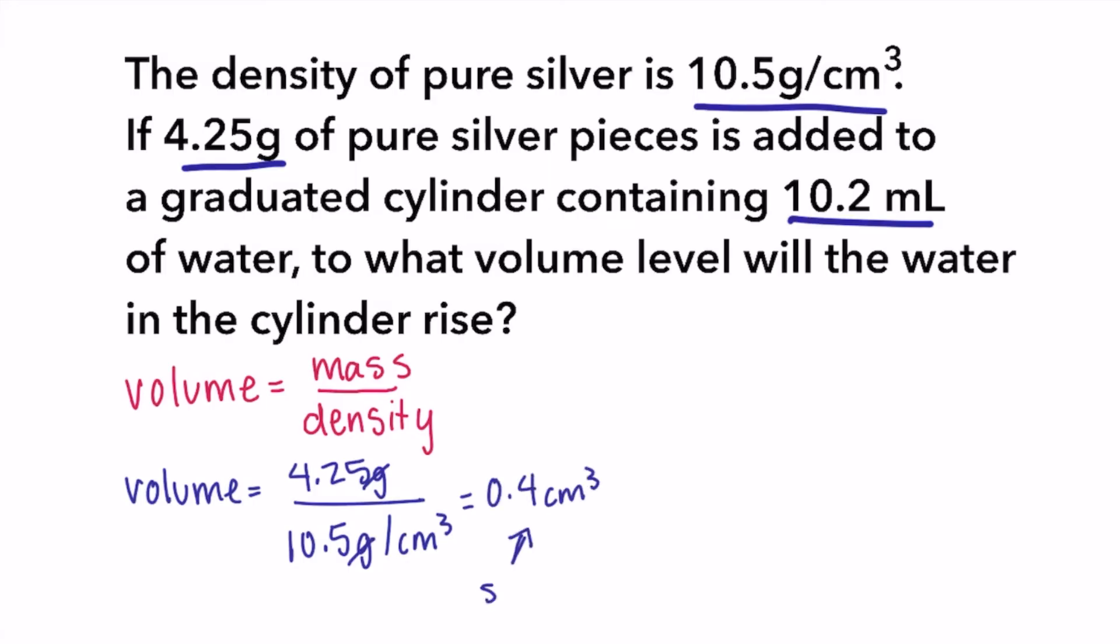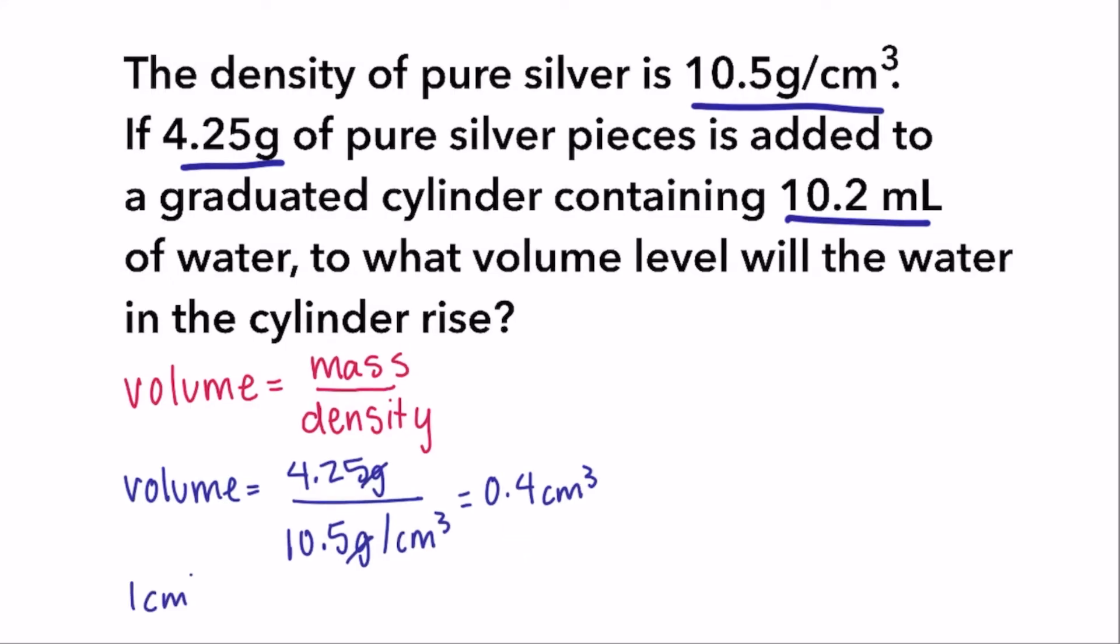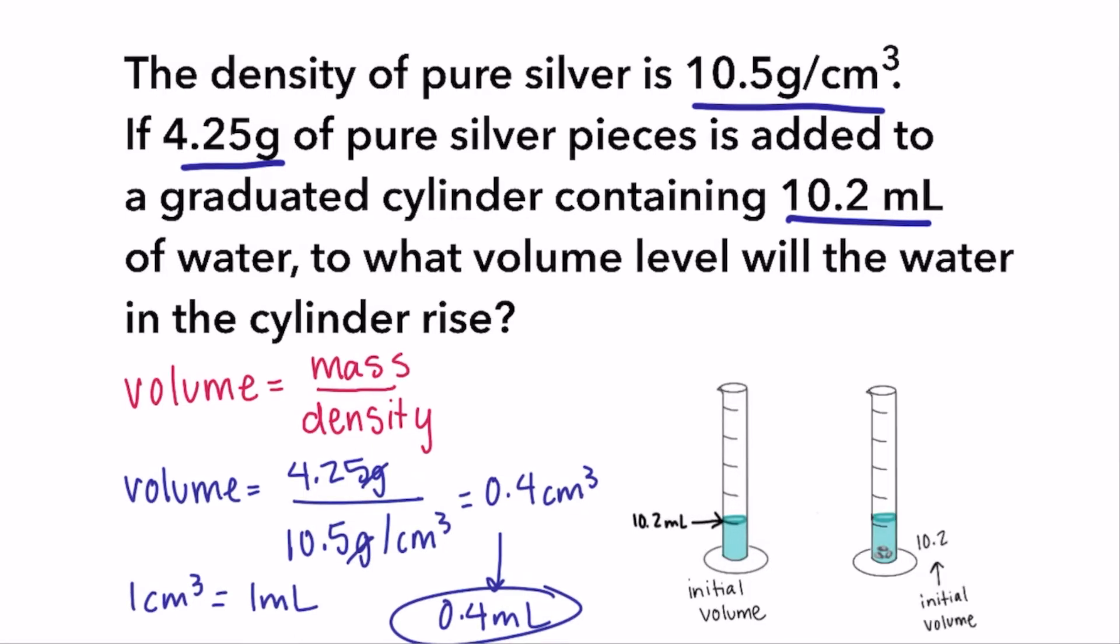So our silver pieces have a volume of 0.4 cubic centimeters. One cubic centimeter is equal to one milliliter, so 0.4 cubic centimeters is equal to 0.4 milliliters. If we were to add this piece of silver into the graduated cylinder containing 10.2 milliliters of water, the final volume of the water would be 0.4 milliliters more than that, or 10.6 milliliters. So our final answer is 10.6 milliliters.